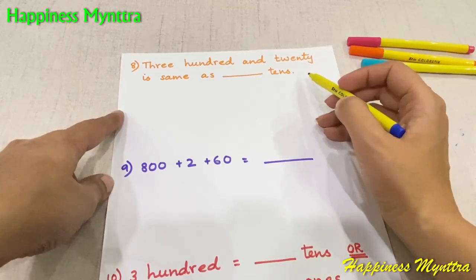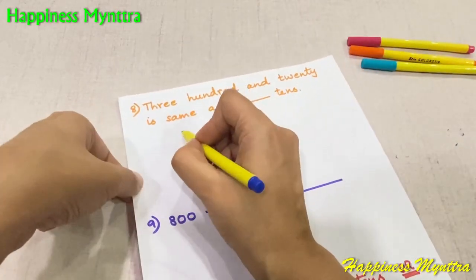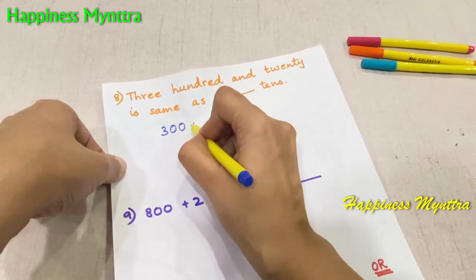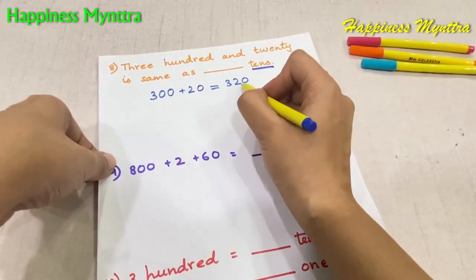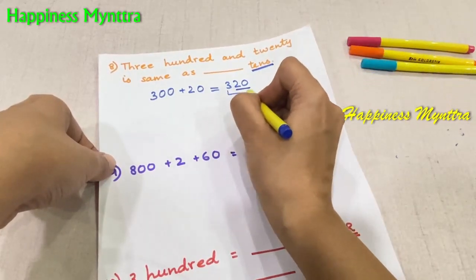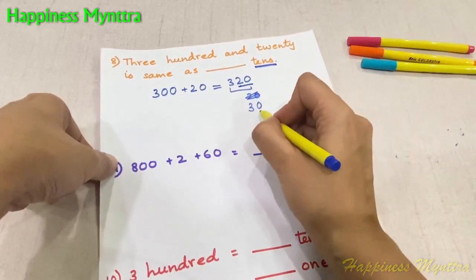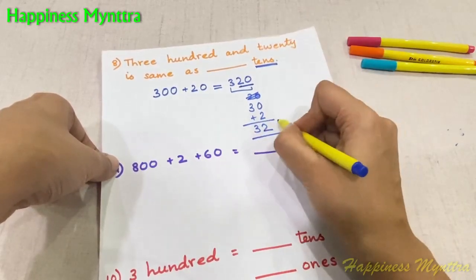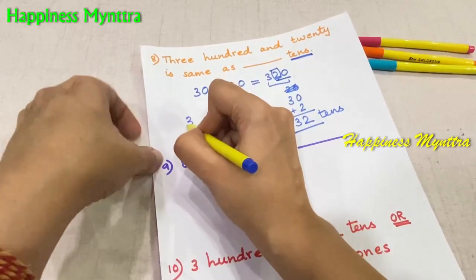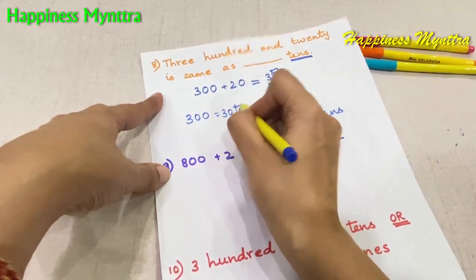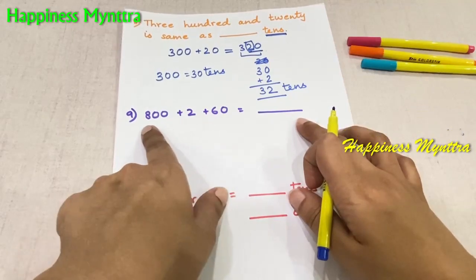Question 8: three hundred and twenty is the same as dash tens. This is again the concept of regrouping. Three hundred and twenty gives us 2 tens from the 20 and 30 tens from the 300, so the answer is 32 tens. Children need to be a little attentive here since the information may be presented in a jumbled way. The answer for the next number 862 is 800, six tens, and two ones.